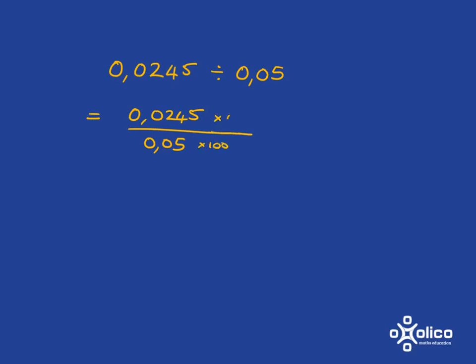But then we also have to multiply the top by a hundred so that we keep things the same, the fraction isn't changed. And so what we will then get is at the top we will have 2.45 and at the bottom 5. Now we've got a decimal divided by a whole number which we know how to do so we can just go ahead and do it.